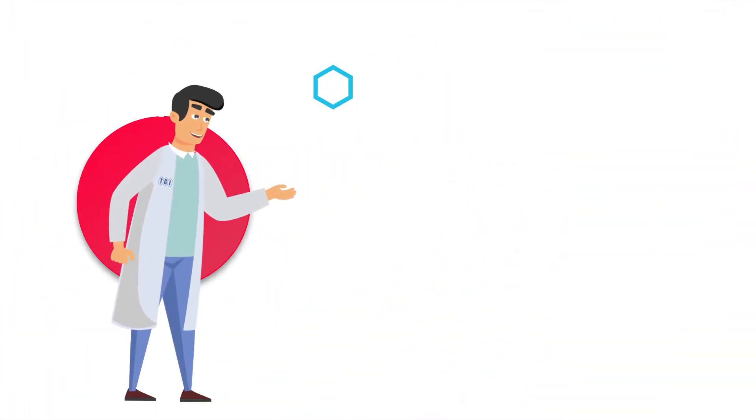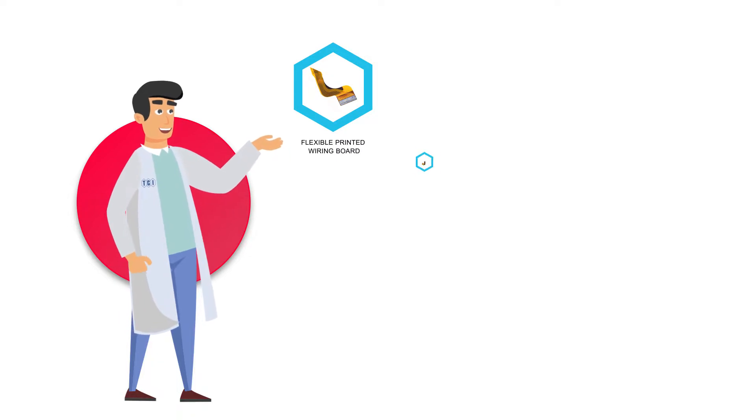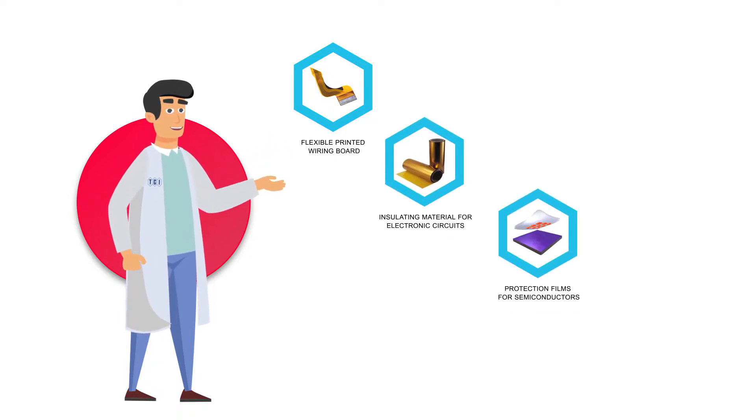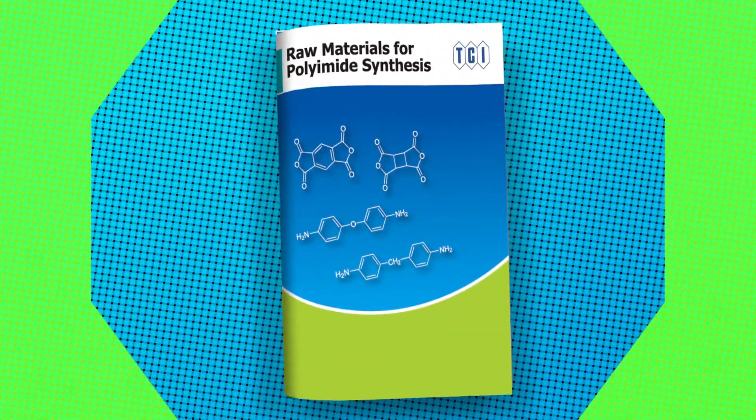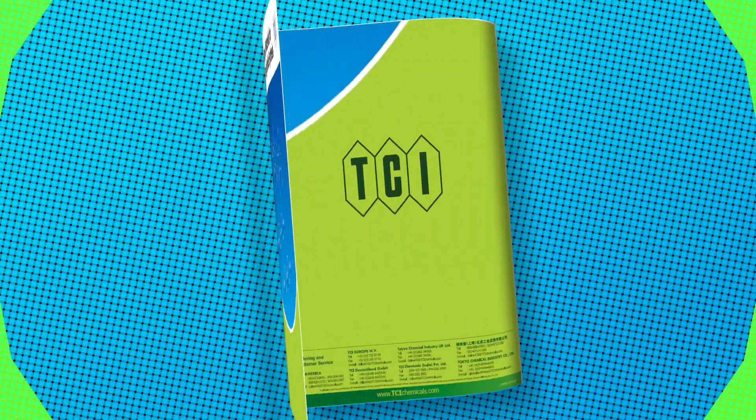Polyimides are used in flexible printed wiring boards in electronic devices, insulating material for electronic circuits, protection films for semiconductors, and are used as an alignment film to arrange liquid crystal molecules in one direction.